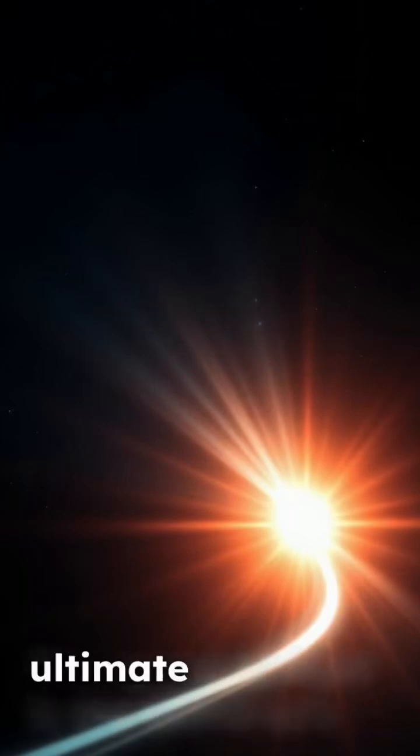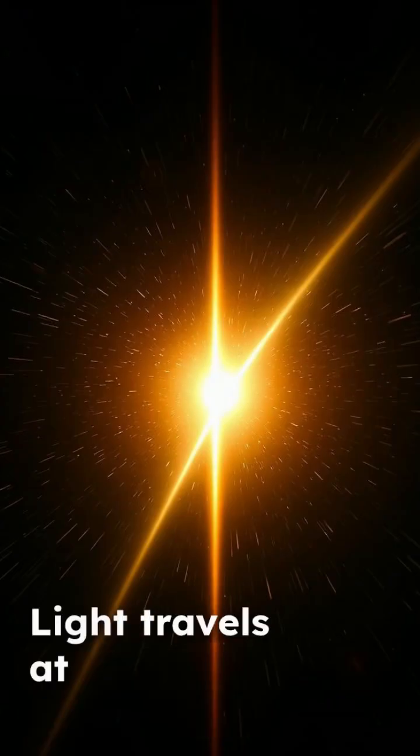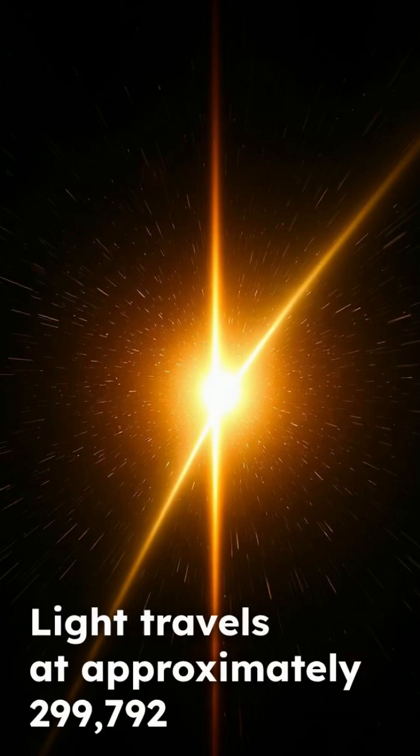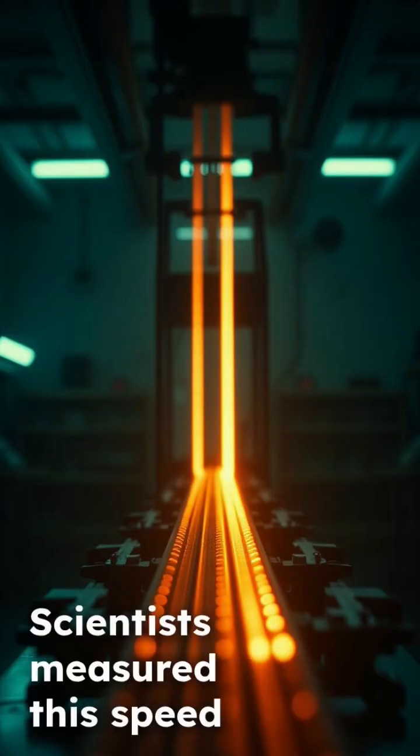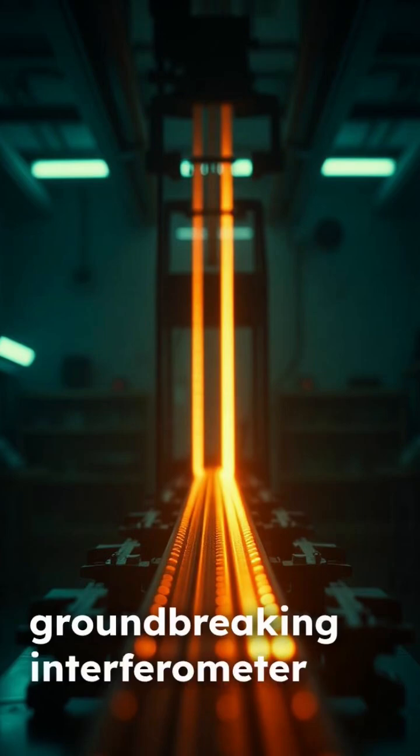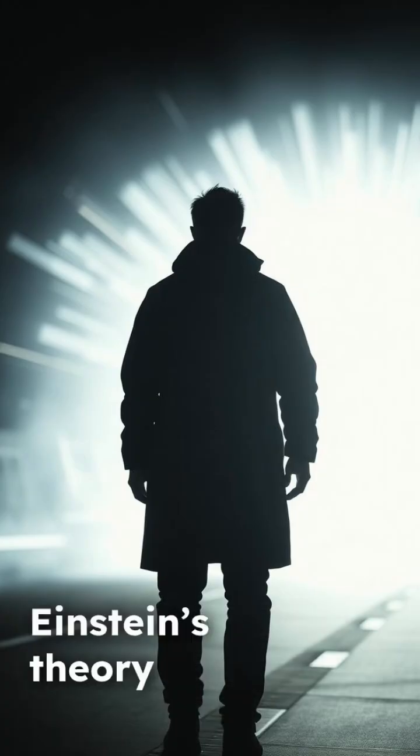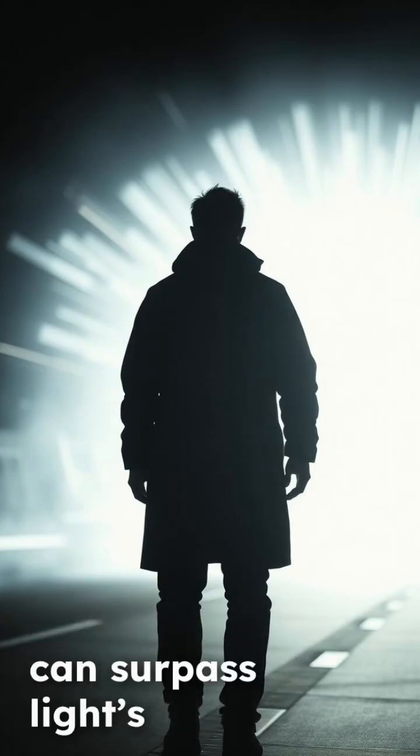The speed of light is the universe's ultimate speed limit. Light travels at approximately 292 kilometers per second in vacuum. Scientists measured this speed using a groundbreaking interferometer experiment. Einstein's theory showed that nothing can surpass light's speed.